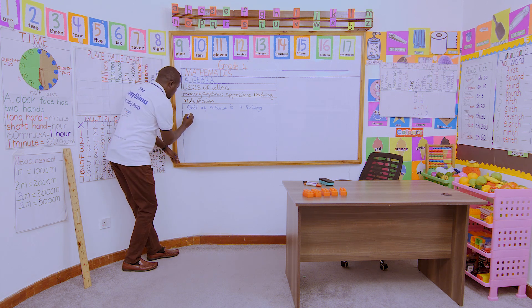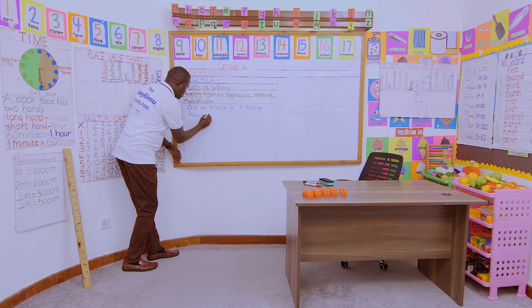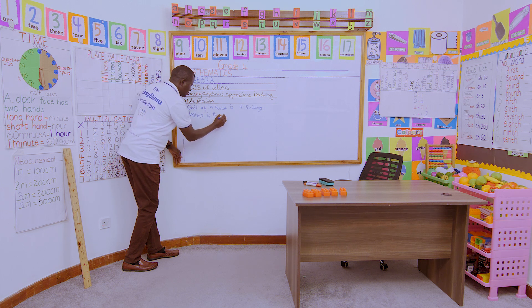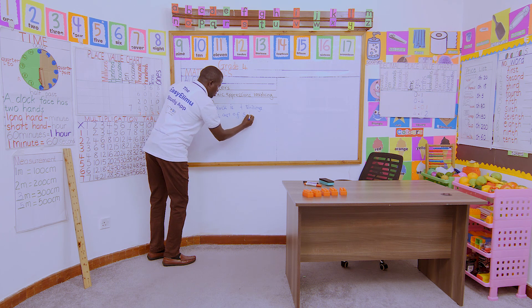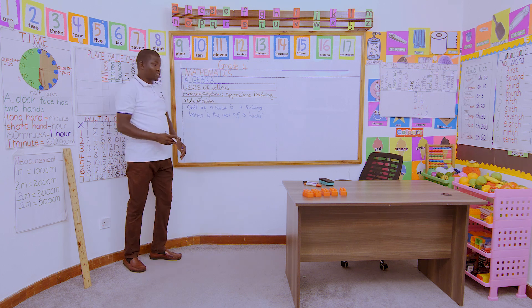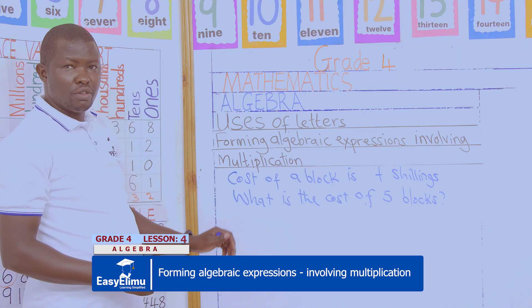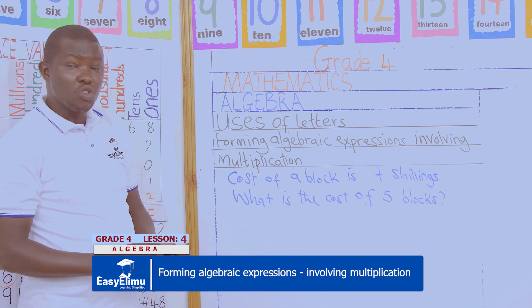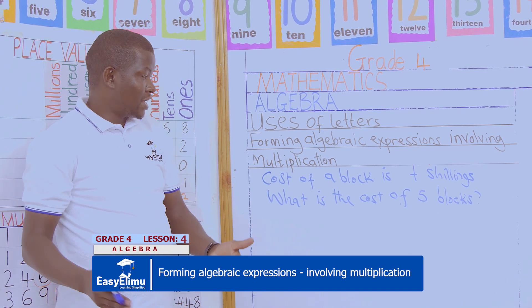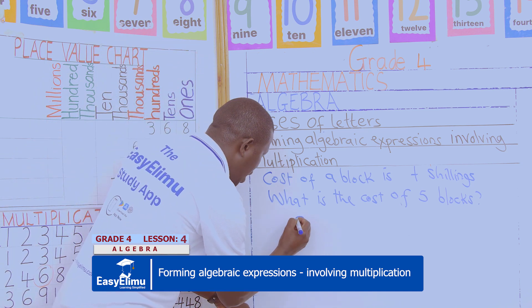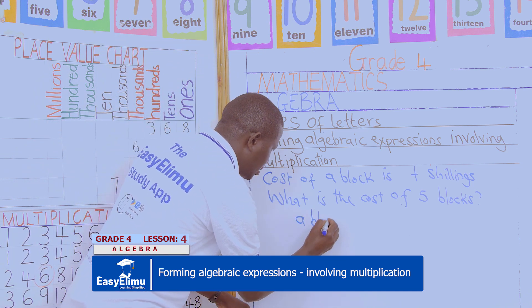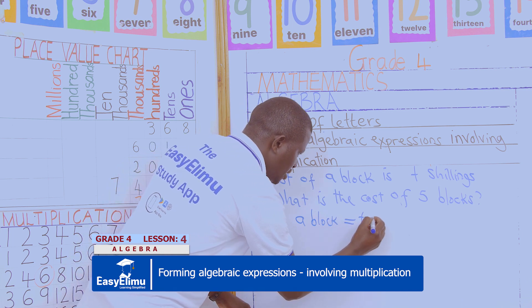What is the cost of five blocks? How much did he spend buying the five blocks? We have said, to get the cost of the blocks which John bought, how do we form the expression? Who can give us a clue? Remember, we have said one block costs T shillings.